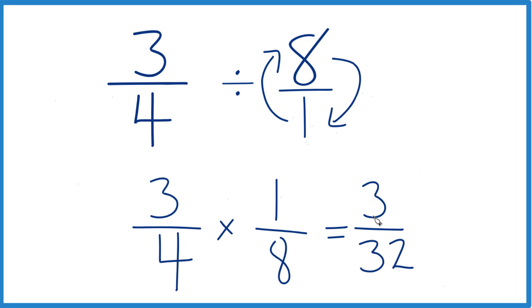We end up with three thirty-seconds. So three-fourths divided by eight, or three-fourths times one-eighth, gives us three thirty-seconds.